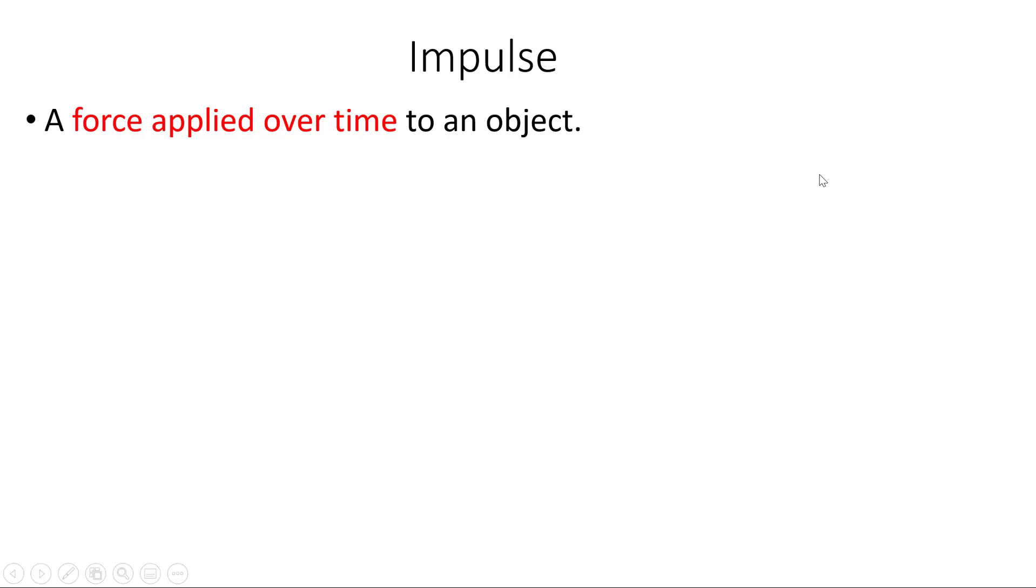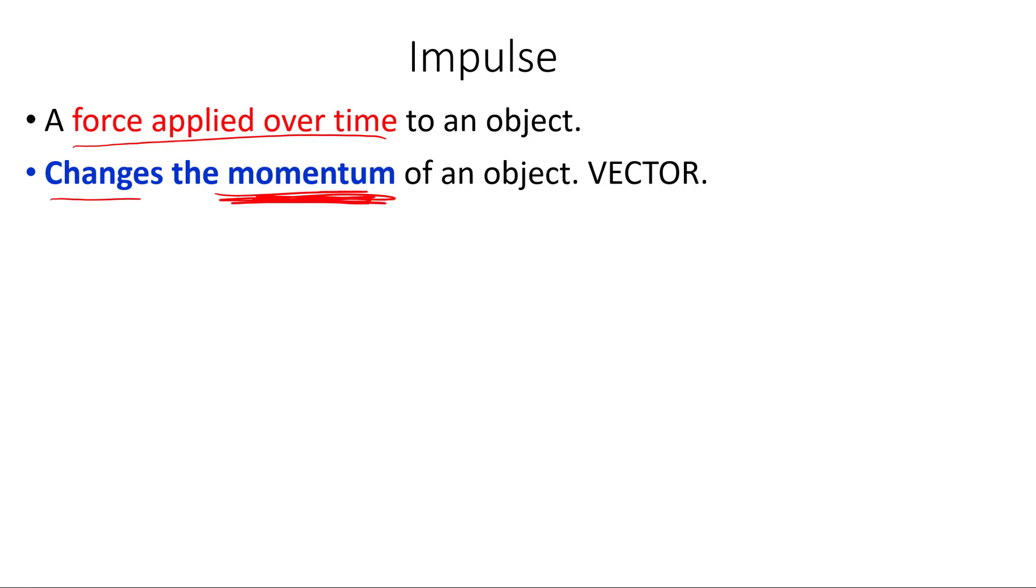An impulse is really just a force applied over time to an object. When you apply an impulse, when you push on an object over a period of time, what you change is the momentum of an object. You change the velocity vector, so you change the momentum. That means that impulse is a vector, because it's a force applied over time.